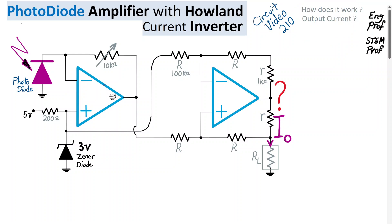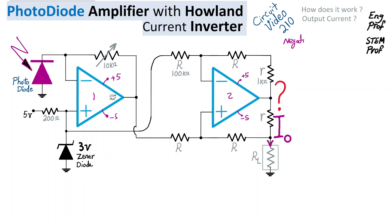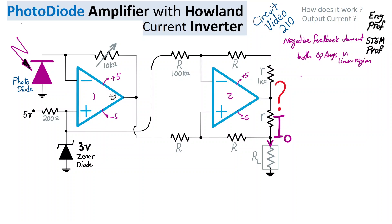Let's quickly analyze the circuit. We assume both op-amps are properly biased — for example, with a plus/minus 5V supply voltage. The output of the first stage is connected to the inverting terminal, so the first stage is clearly in negative feedback. The second stage has both negative and positive feedback, but with proper design, negative feedback is dominant. Therefore, both op-amps operate in the linear region, not saturated, and a virtual short is valid for both — meaning the voltage at the negative and positive input terminals should be the same.